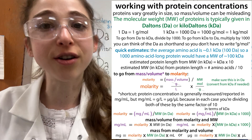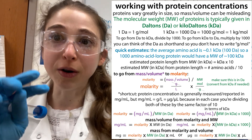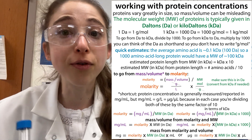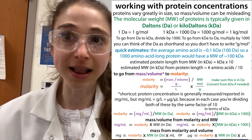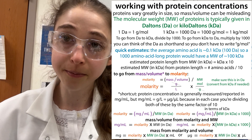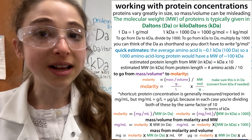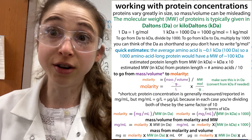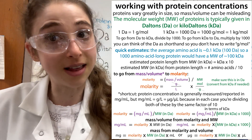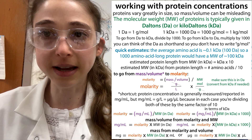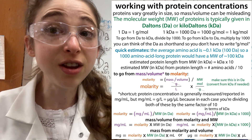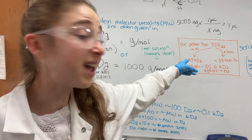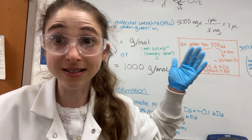We can be even lazier when we talk about proteins and do a quick back-of-the-envelope calculation in our heads to go from the number of amino acids to the molecular weight and vice versa. The average molecular weight of an amino acid is about 100 Daltons, or 0.1 kilodaltons, because there are 1,000 Daltons in a kilodalton. So if we know the number of amino acids, we just divide by 10 and that gives us the approximate kilodaltons.